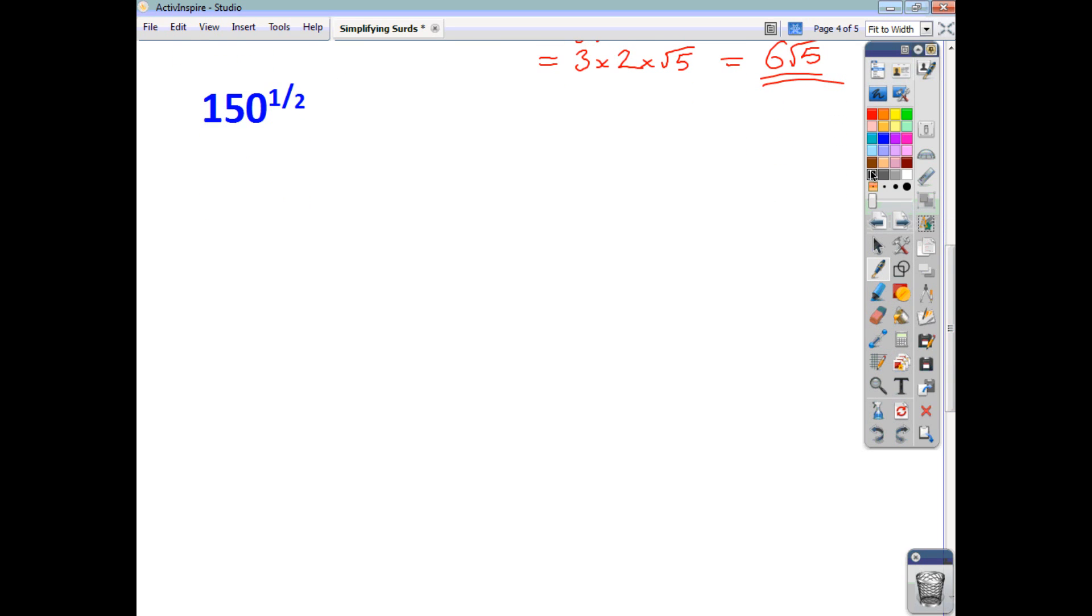Now, anything to the power of a half is the same as having the square root of it taken. So this is just the same as the square root of 150. Now, what are the square factors of 150? Well, 25 is certainly one. So 25 times 6 would give you 150. So that's root 25 times root 6. Root 25 is 5. So you put 5 times root 6, which we write as 5 root 6. There are no square factors of 6. So we have reached the end of the road.